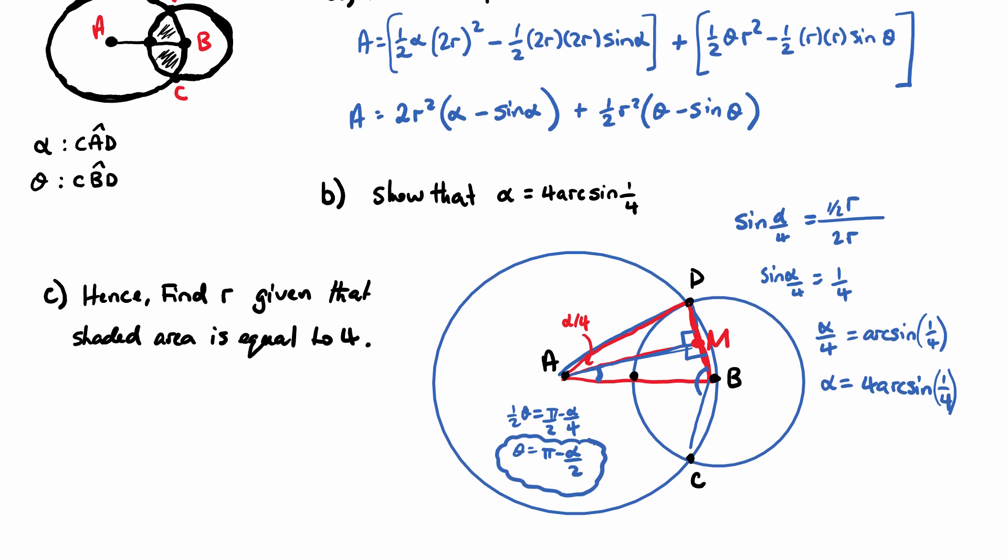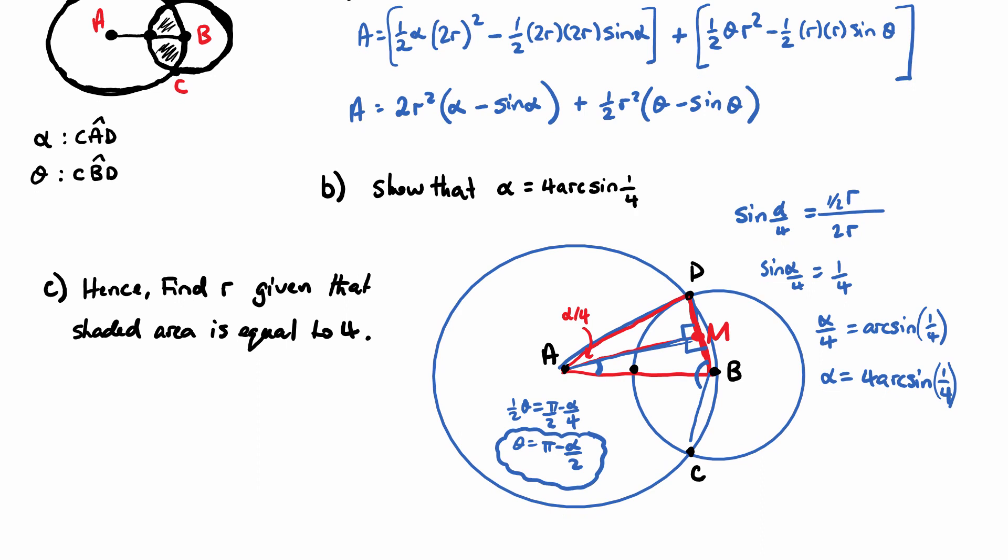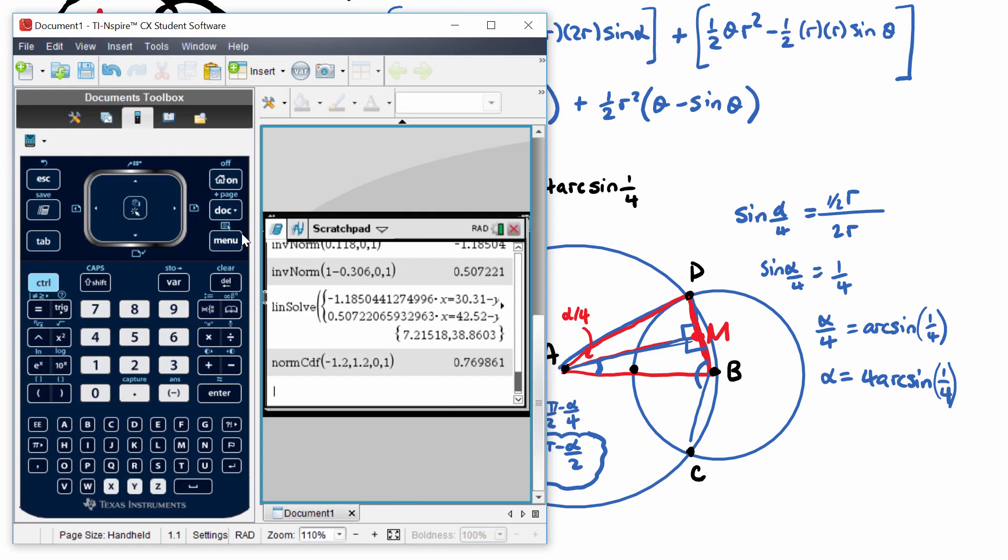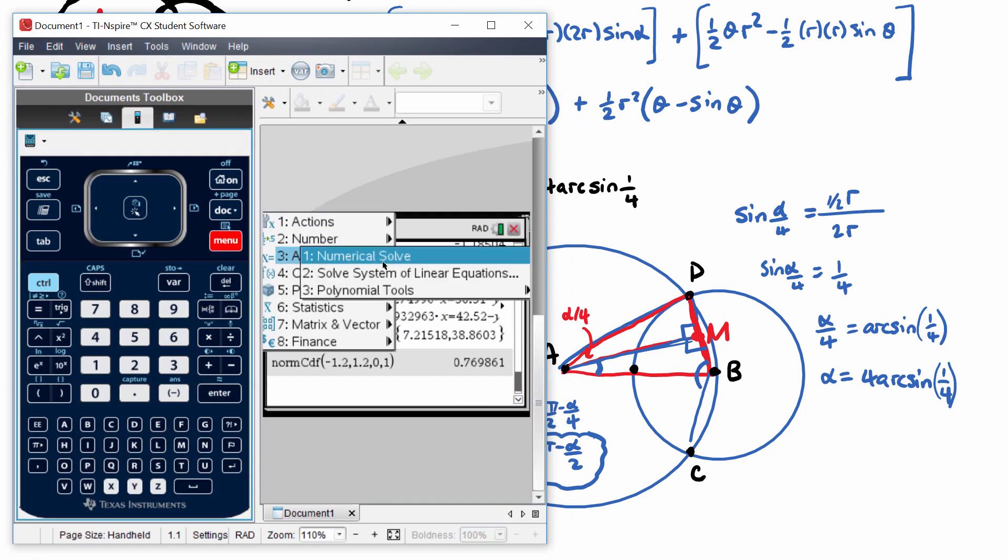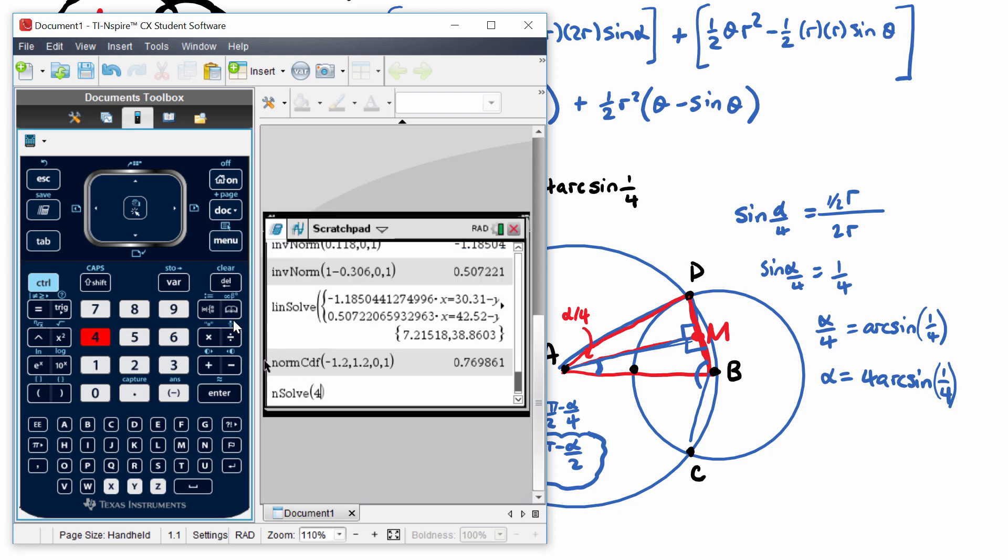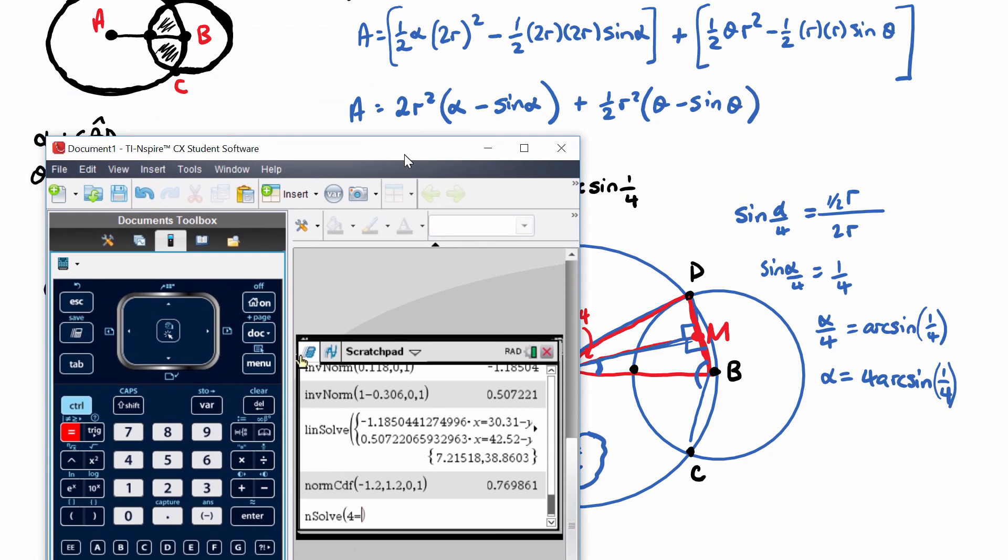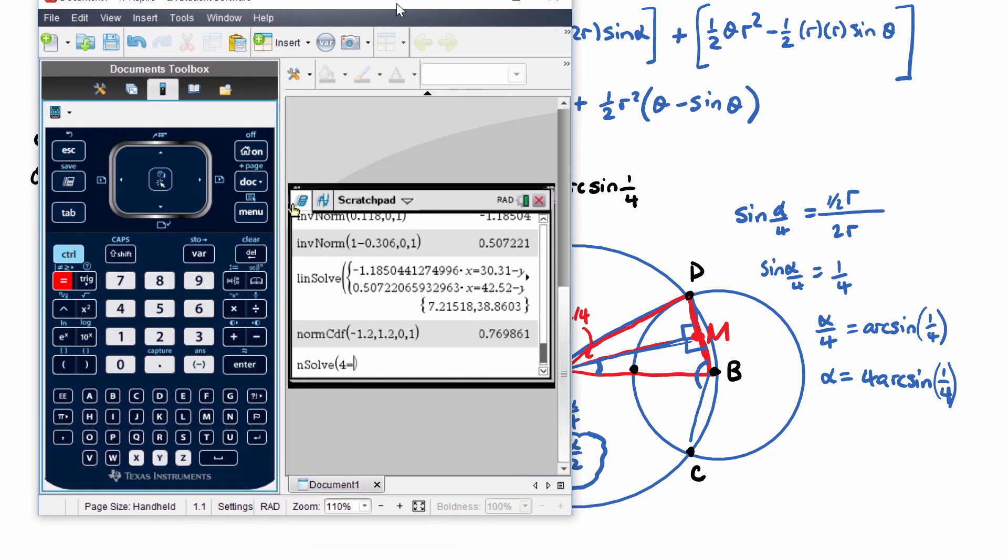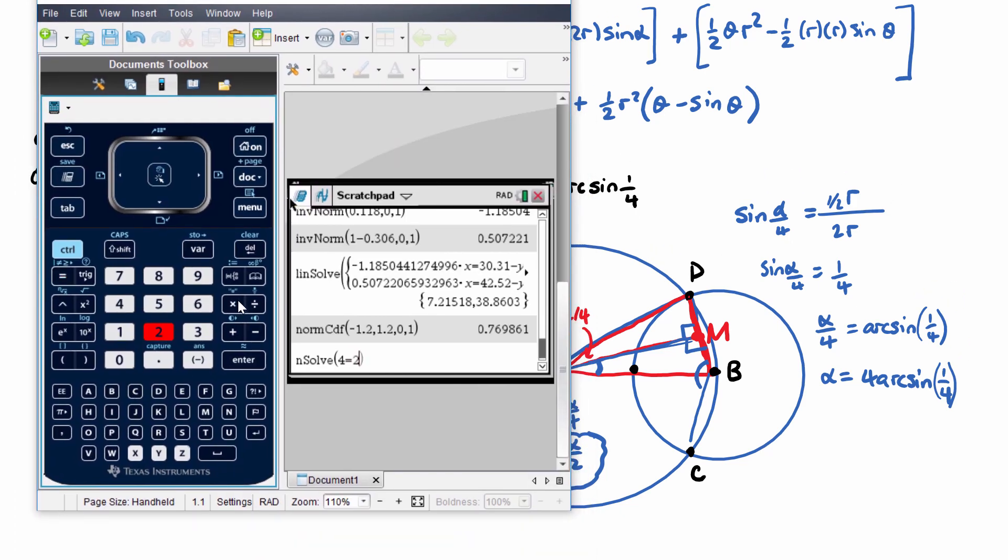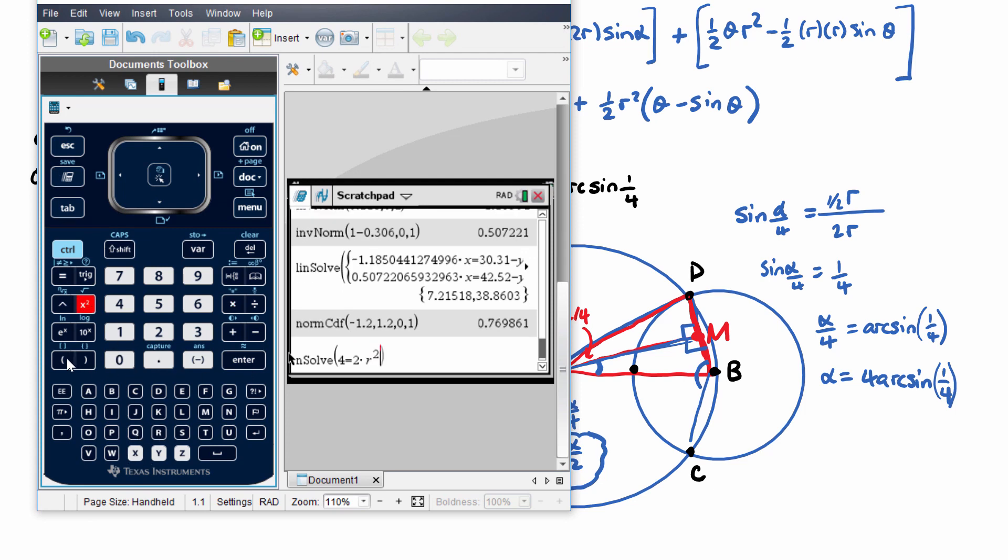Okay, so let's put all of this into our calculator. I'll do this with you. I'm going to get the area which is 4 equals. So menu, Algebra, we're going to do an n solve. 4 will equal, now we have 2 R squared. So 2 times R squared. Now this is times outside a bracket.